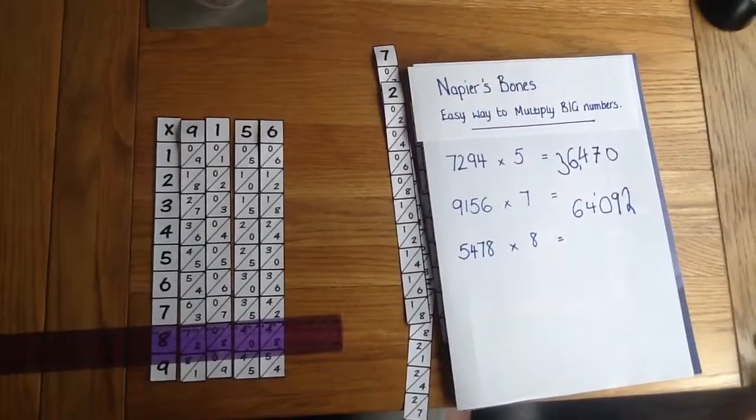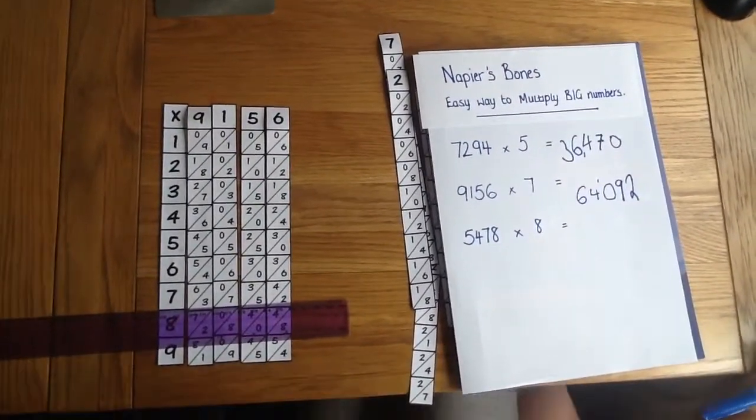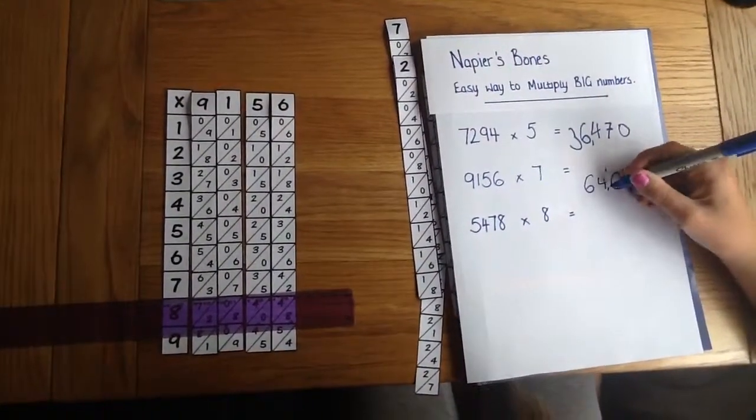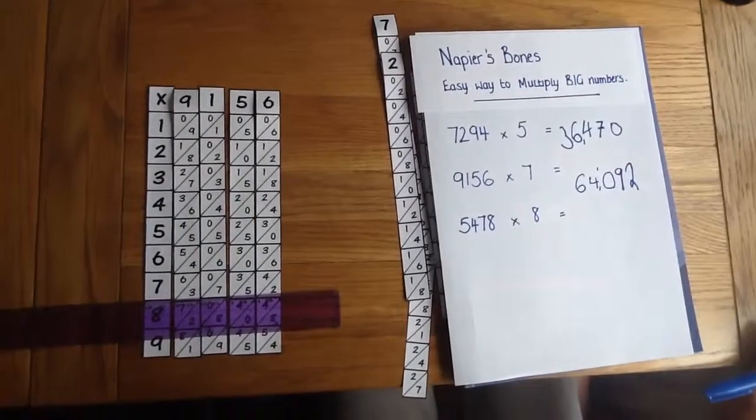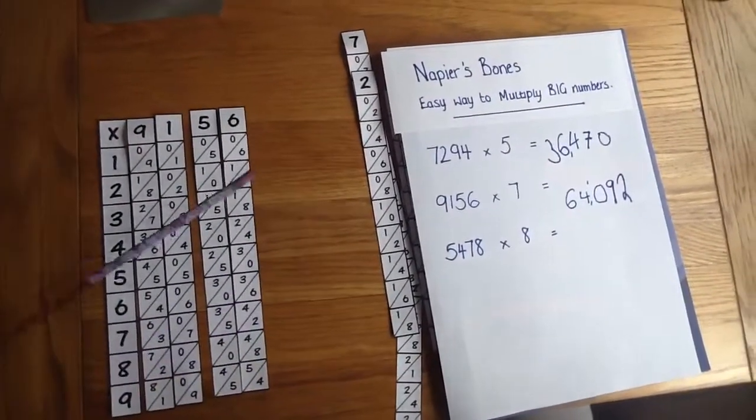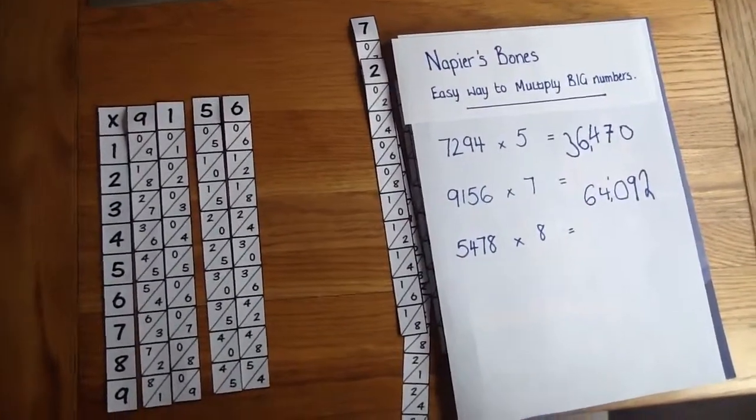So 9,156 times 7 equals 64,092. So we'll just quickly do the last one for you so you can see that one as well. So hopefully we're not making it too confusing.